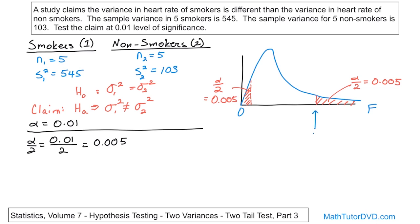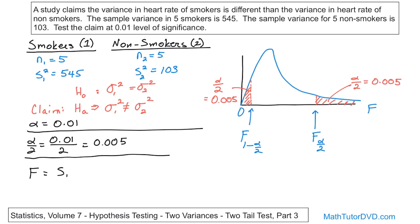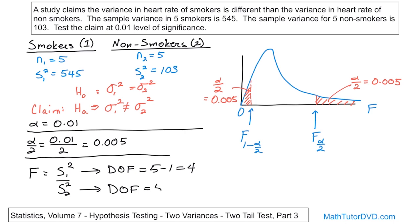The right-tail critical value is called F sub alpha over two, because it has an area of alpha over two to the right. The left-tail critical value is F sub one minus alpha over two. To find these, we first need the degrees of freedom. The degree of freedom for the numerator is n one minus one — five minus one, which is four. And for the denominator, it's also five minus one, which is four. So we have four degrees of freedom for both numerator and denominator.